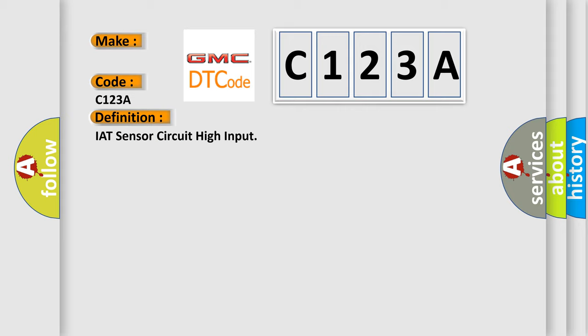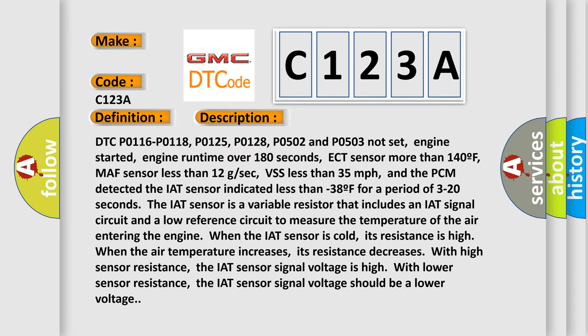Here is a short description of this DTC code. DTC P0116, P0118, P0125, P0128, P0502, and P0503 not set; engine started; engine runtime over 180 seconds; ECT sensor more than 140°F; MAF sensor less than 12 g/sec; VSS less than 35 miles per hour; and the PCM detected the IAT sensor indicated less than minus 38°F for a period of 3 to 20 seconds.